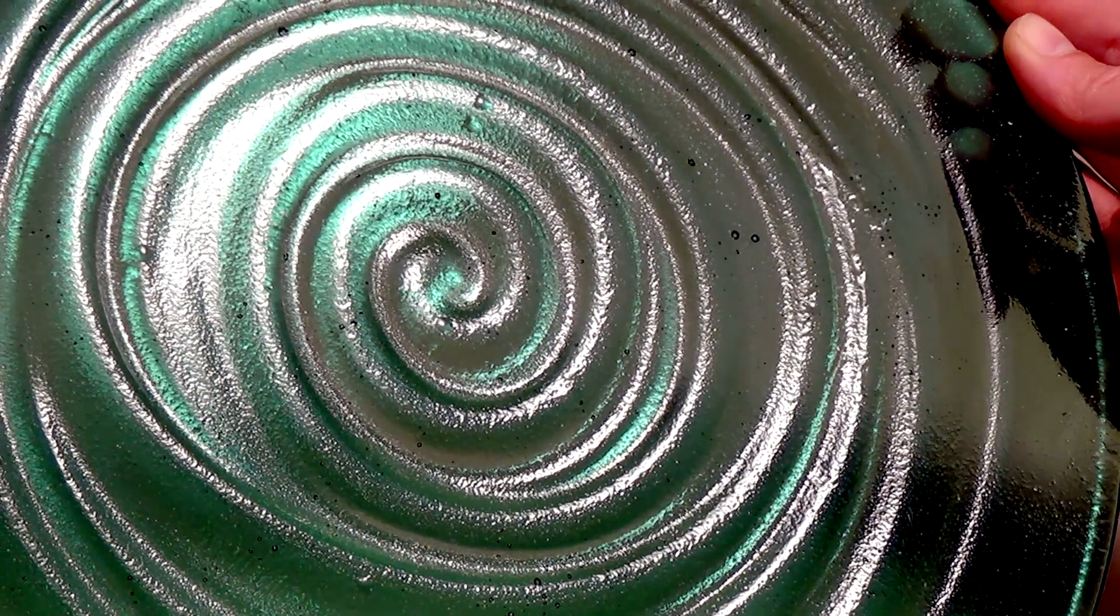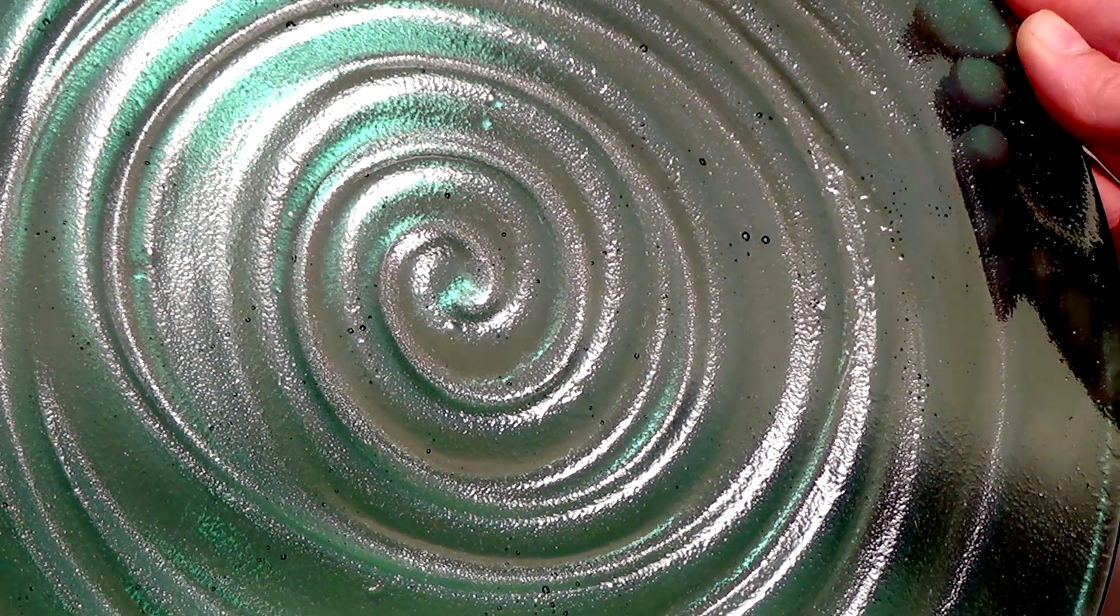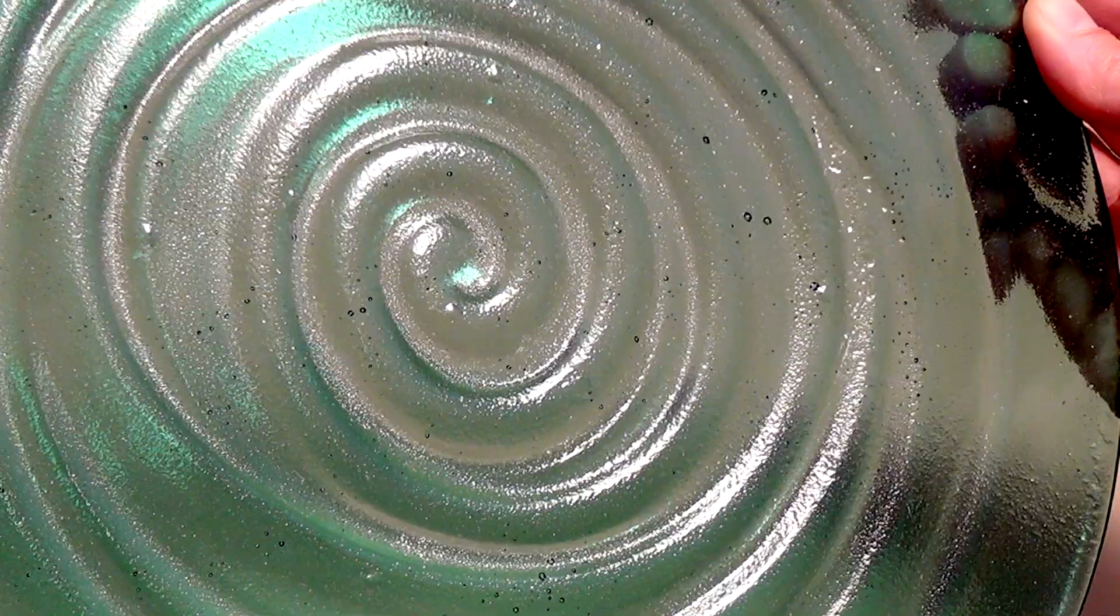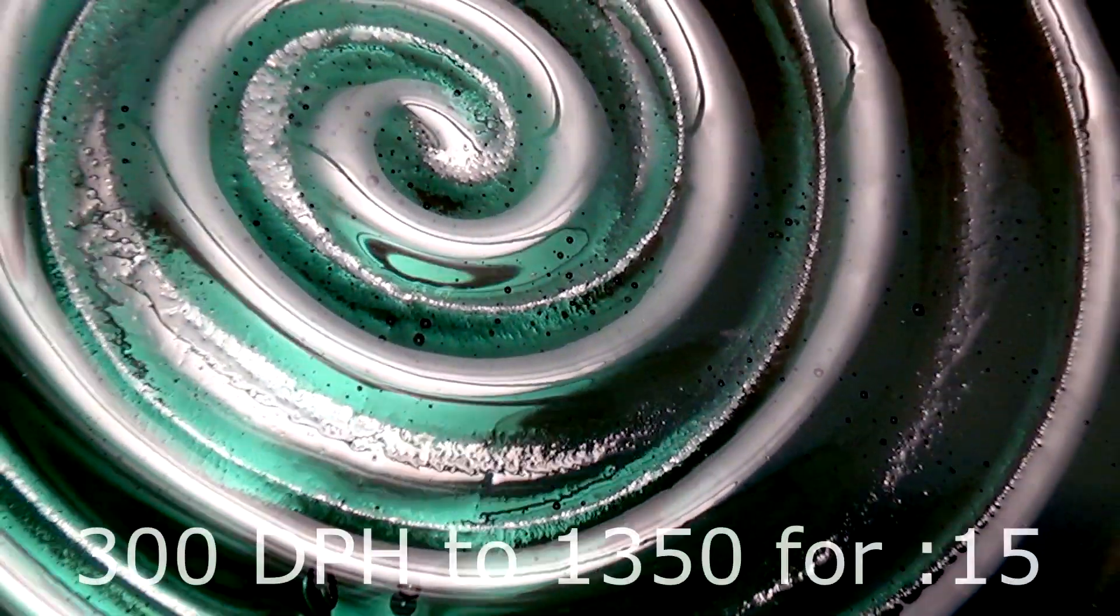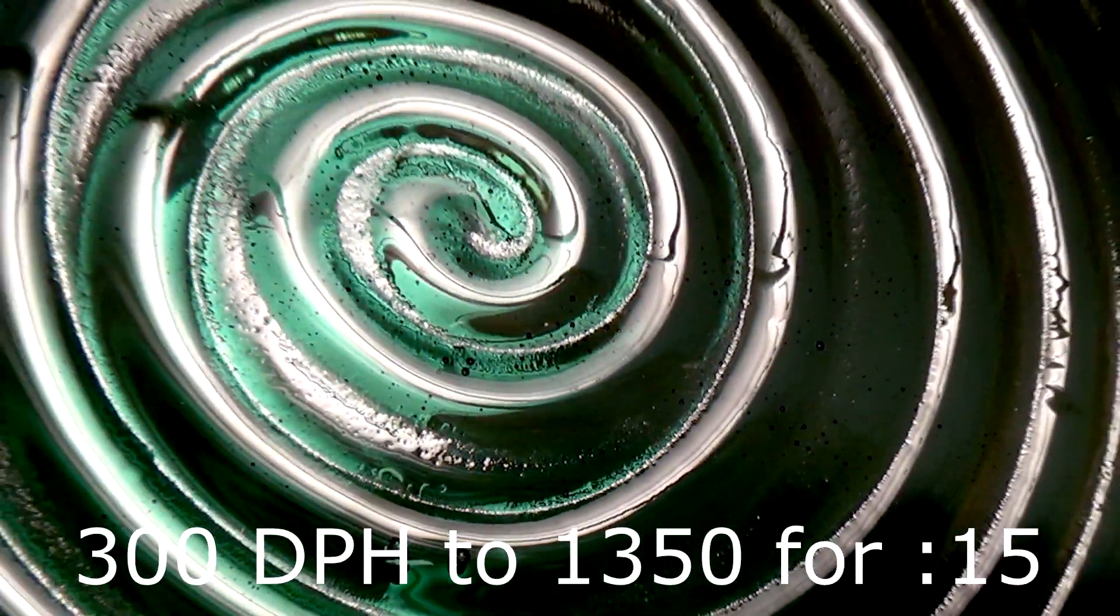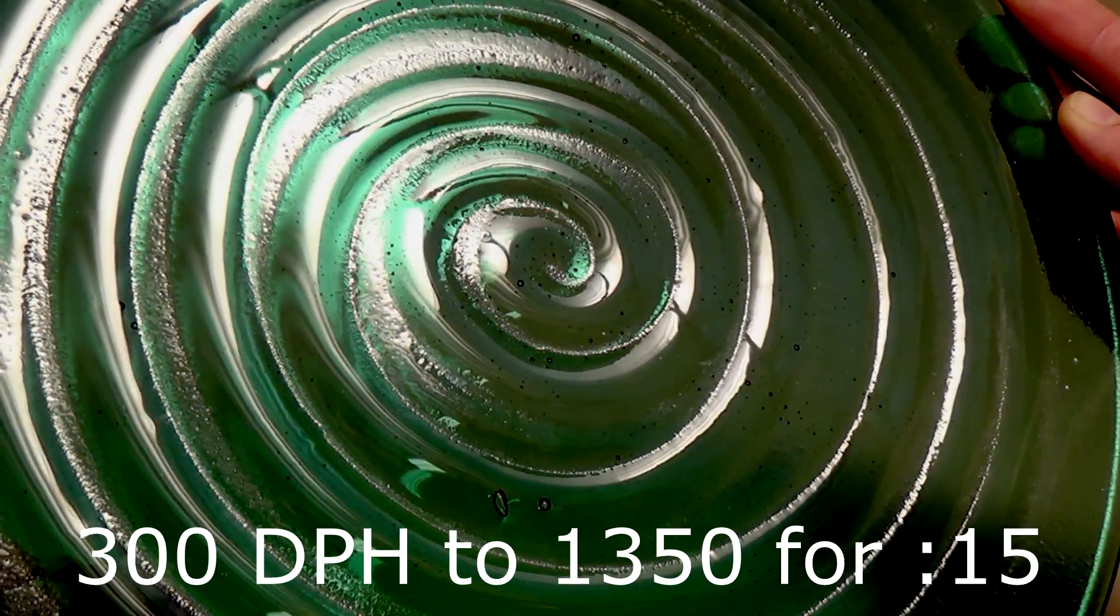There are some slight dimples from the vent holes, but they are not overpronounced. Using a lower temperature will still create a strong, dimensional look, but the spirals will be shiny because it didn't quite touch the bottom of the valleys.